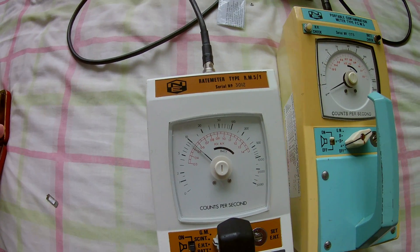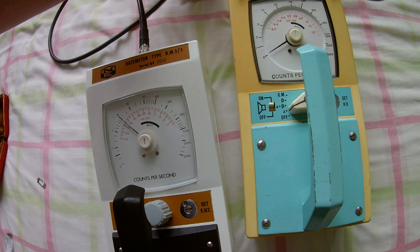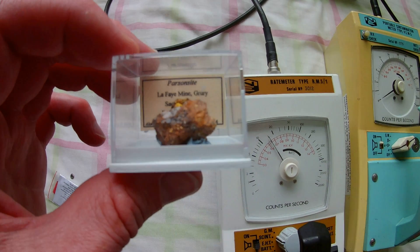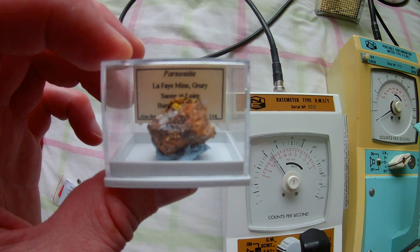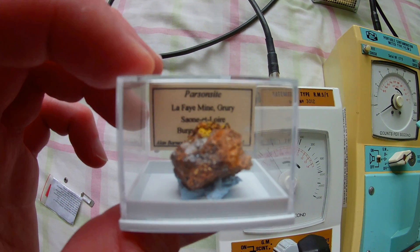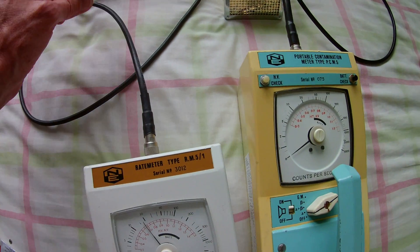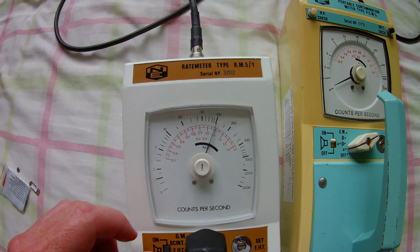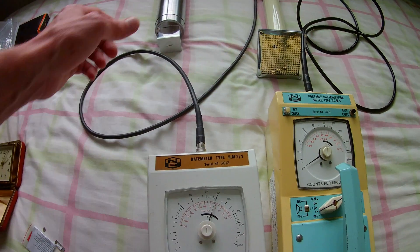Now some other radioactive materials are common in the household as well. This one is parsonite from Groury in Burgundy, France. And if we have a look at what this gives, it's a slight reading there.